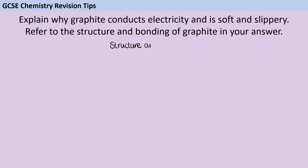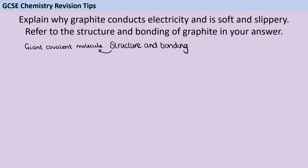Let's think about that structure and bonding. Structure means what kind of substance is this — if you looked at it under a microscope, what could you actually see? The first thing we want to say is that it is a giant covalent molecule. It's not an ionic lattice, a metallic lattice, or a simple molecule — it's a giant covalent molecule. When we say 'giant,' that isn't just a descriptive word; it's an actual categorization, meaning it's made up of thousands and thousands of atoms.